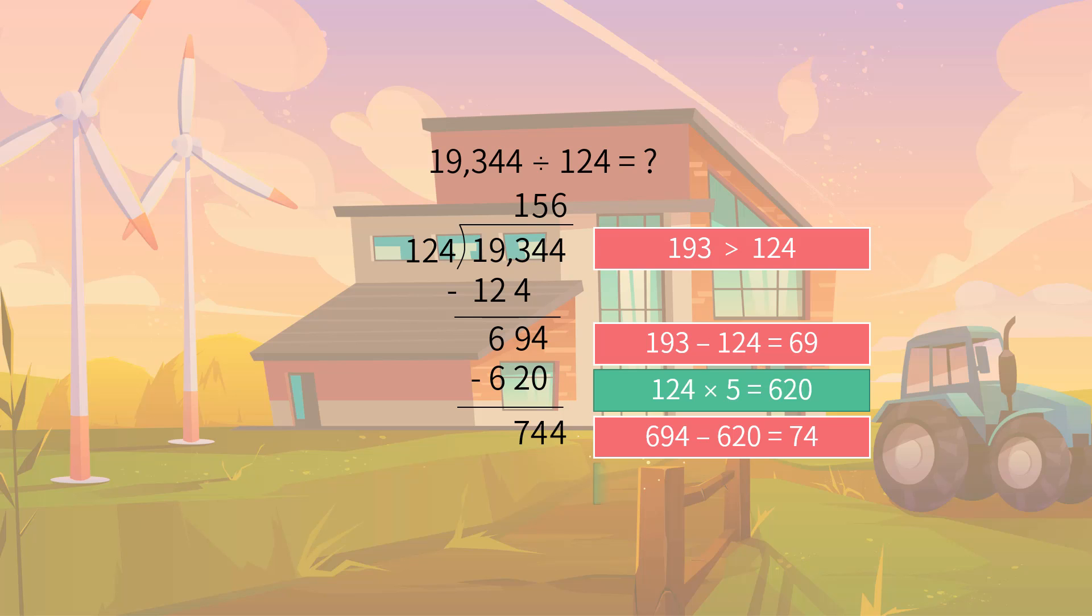Finally, we know Uncle Josh would get all his payments back in 156 weeks. Hey guys, have you got the correct answer? Have you got the quotient?